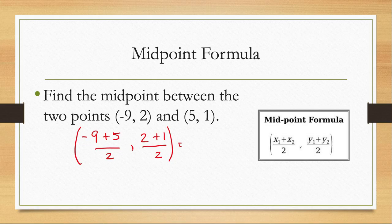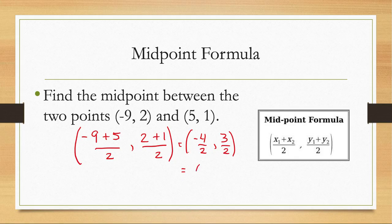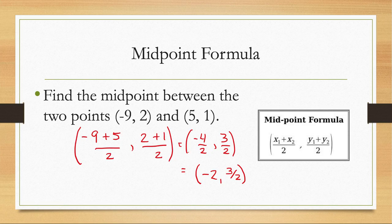So -9 plus 5 is going to give me -4 divided by 2. 2 plus 1 is going to give me 3 divided by 2. The first fraction can be simplified. -4 divided by 2 is -2. The second fraction does not simplify, so we'll leave it as it is. And so our midpoint between those two points should be (-2, 3/2).